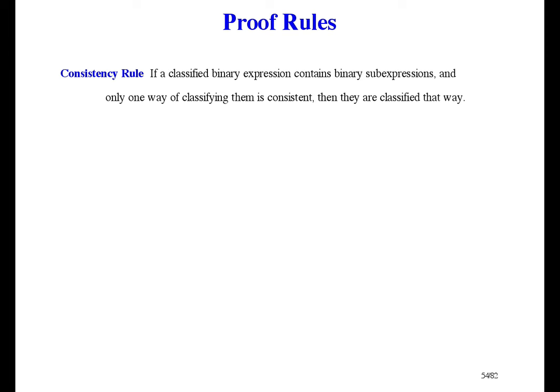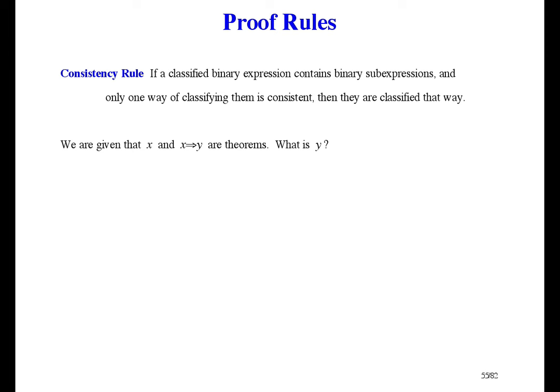Next, we have the consistency rule. It says: if a classified binary expression contains binary sub-expressions, and the only one way of classifying them is consistent, then they are classified that way. This time we know what the whole expression is, and we're wondering what the parts might be. Here's an example: we're given that x is a theorem, and also that x implies y is a theorem. What's y? Suppose y is an anti-theorem. We have x as a theorem and y as an anti-theorem, so the truth table says x implies y is an anti-theorem. But we already know it's a theorem — that's inconsistent. So y has to be a theorem.